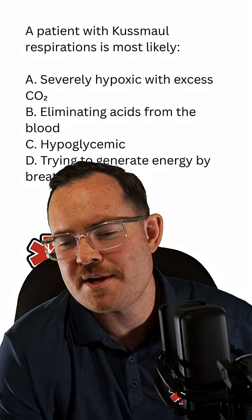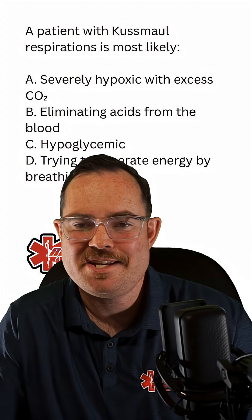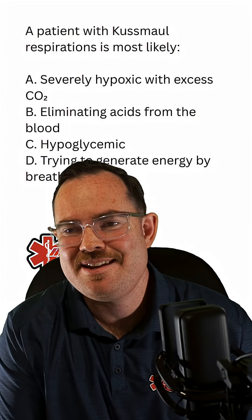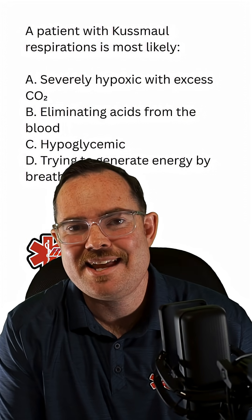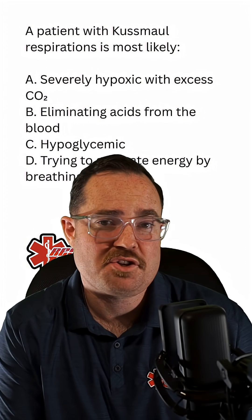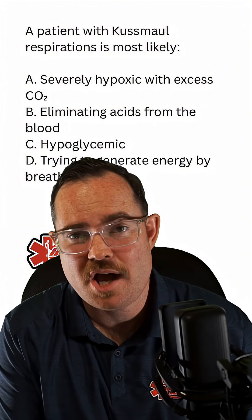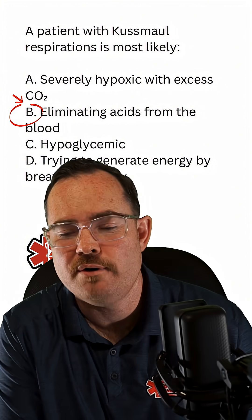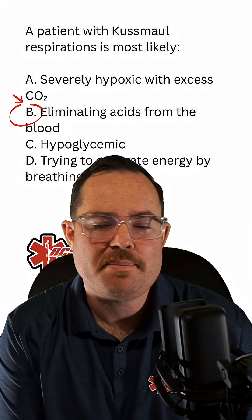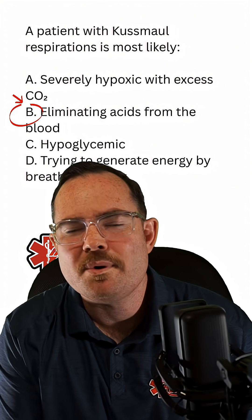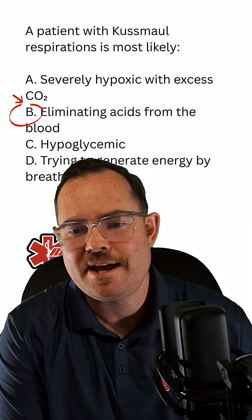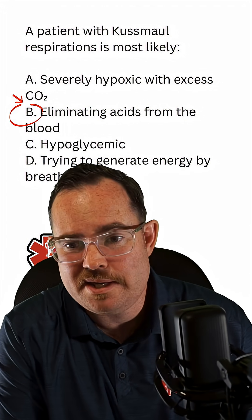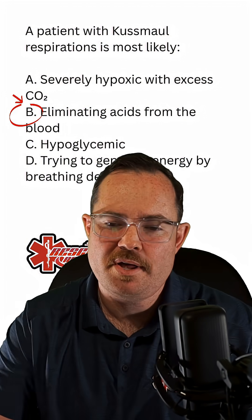Don't think Kussmaul respirations can only be found with DKA, even though that's probably the most common. Any patient in a technically severe metabolic acidotic state can have these Kussmaul respirations — this could be your shock patient, a salicylate overdose (which is an aspirin overdose), or a renal failure patient. There are a lot of different reasons for metabolic acidosis, but in this case the answer is B: eliminating acids from the blood.